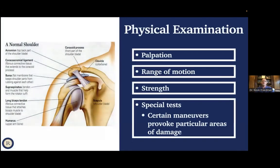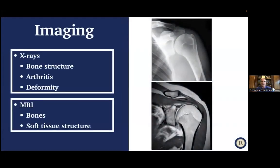Everyone who comes to see me gets a physical examination. There's palpation — feeling for areas of tenderness or deformity — range of motion including reaching overhead, and rotation strength to test the rotator cuff. There are also special tests to assess the rotator cuff, labrum, and shoulder stability. Then there's imaging: x-rays look at bone structure, showing arthritis, deformities, or fractures. An MRI shows not only the bones but also soft tissue structures including tendons, muscles, and ligaments.